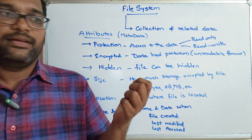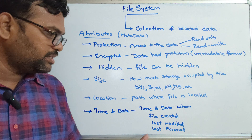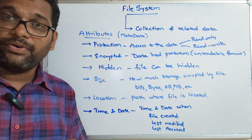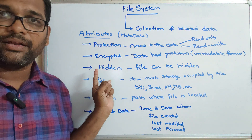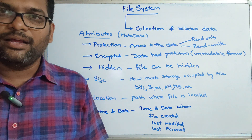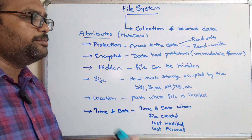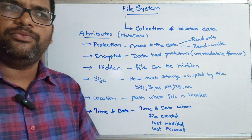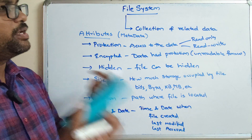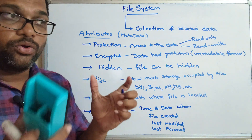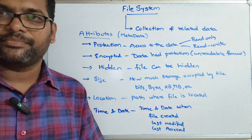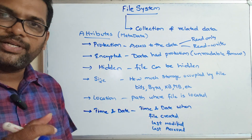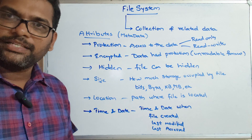So to summarize: location, size, time and date — when it was created, modified, and last accessed. A file can be defined as a collection of related data stored in secondary memory, which is usually the hard disk. A group or collection of files is called a directory. I'll stop here — hope you enjoyed the session. Please like, share, and subscribe to our channel. Thanks for watching!